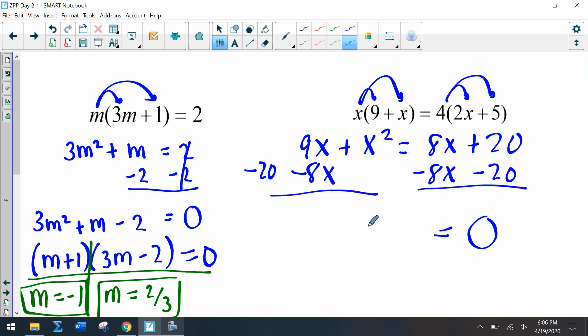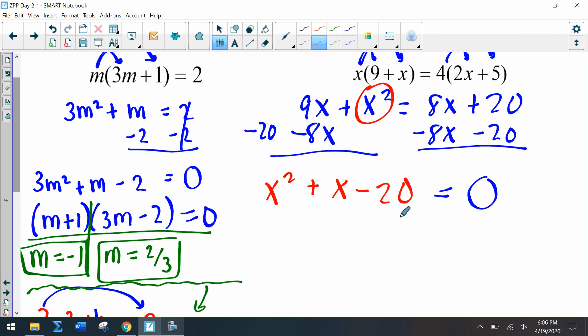So we have zero on the right side, and then on the left side I'm going to rearrange it so it's in standard form. So I'm going to write my x² first, then I'm going to look at my x's, plus x minus 20 equals zero. So now factors of negative 20 that add up to positive one are positive 5 and negative 4. So I know when I tee off, my two solutions are x = -5 and x = 4.